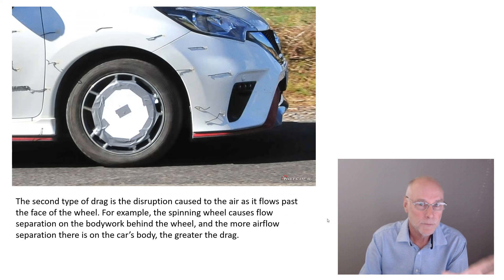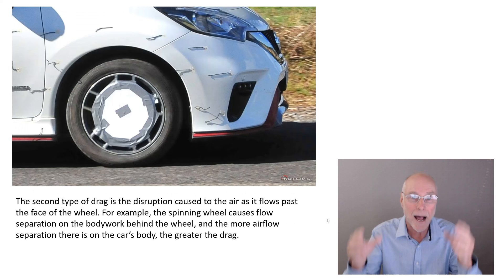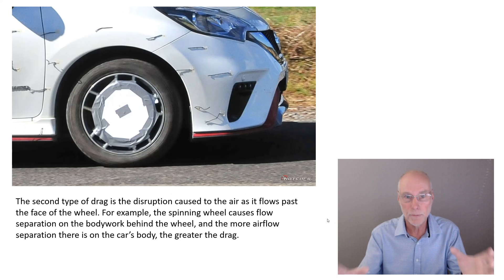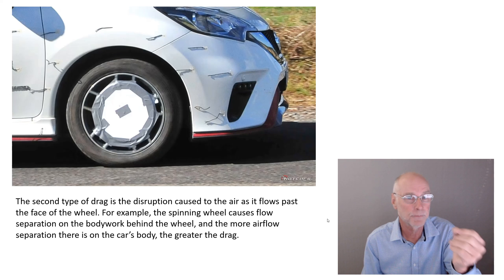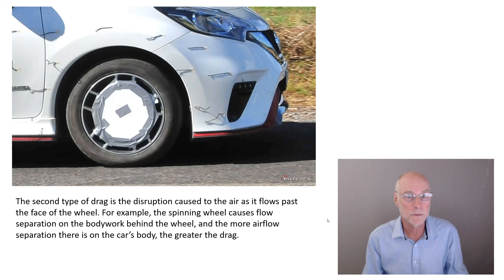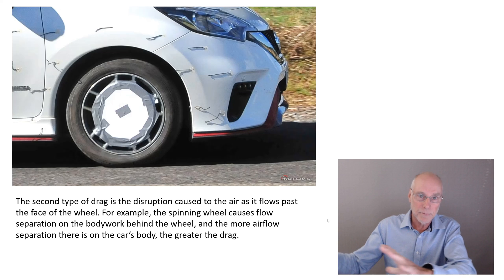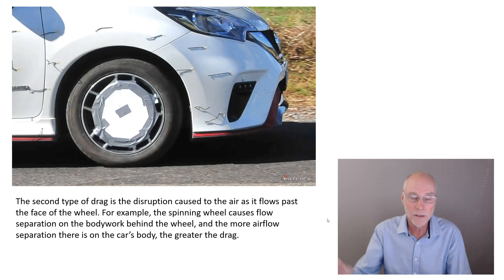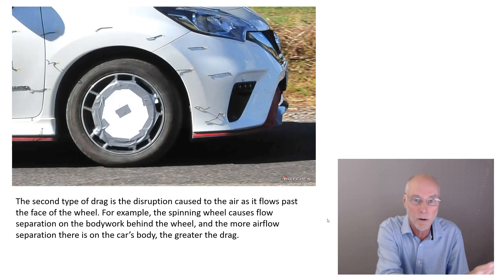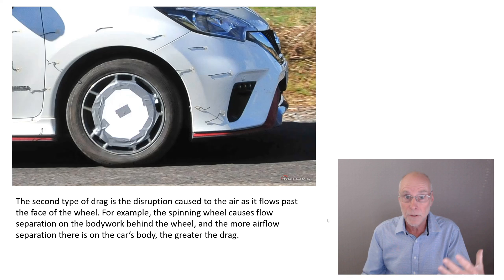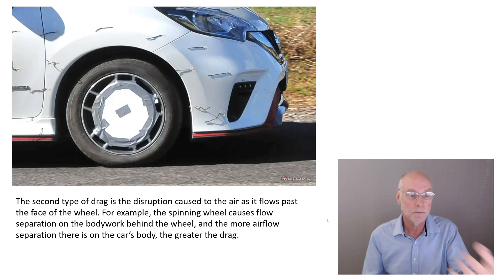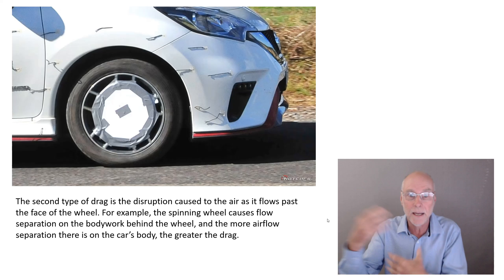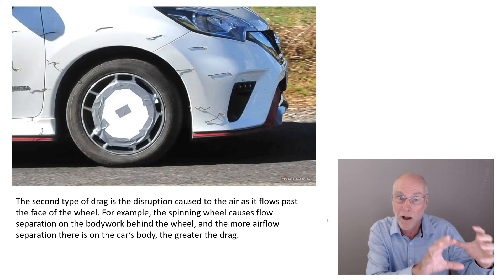The second type of drag caused by wheels and tyres is that the wheels spinning around upset the flow on the bodywork of the car, and especially upset the flow behind the wheels. Lowest drag comes from having attached airflow passing across the surface of the car. Attached airflow is when the air is sliding along the bodywork. Keeping that flow attached is particularly difficult after a wheel — we've got the wheel churning the air up, spinning around. How do we then get the flow attached behind that wheel?